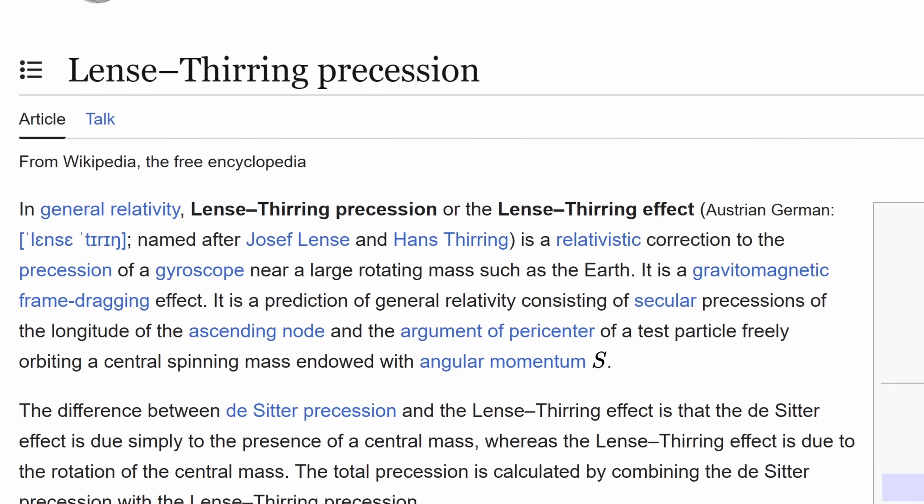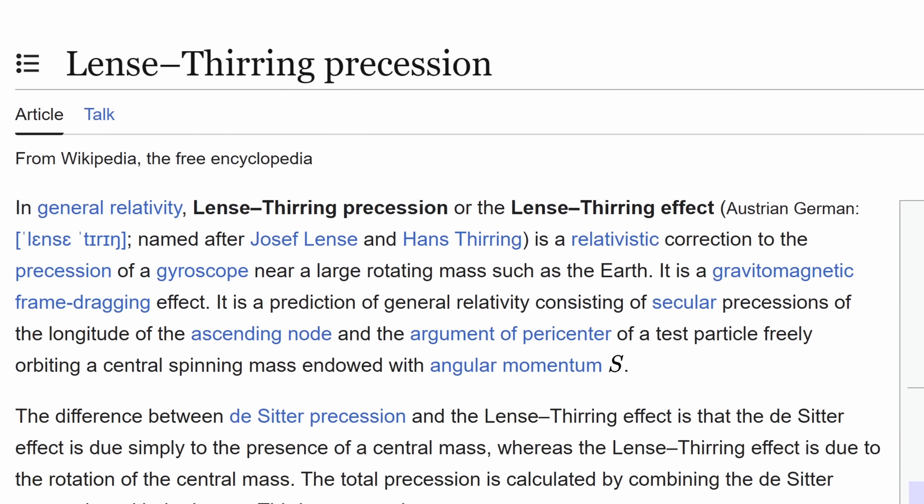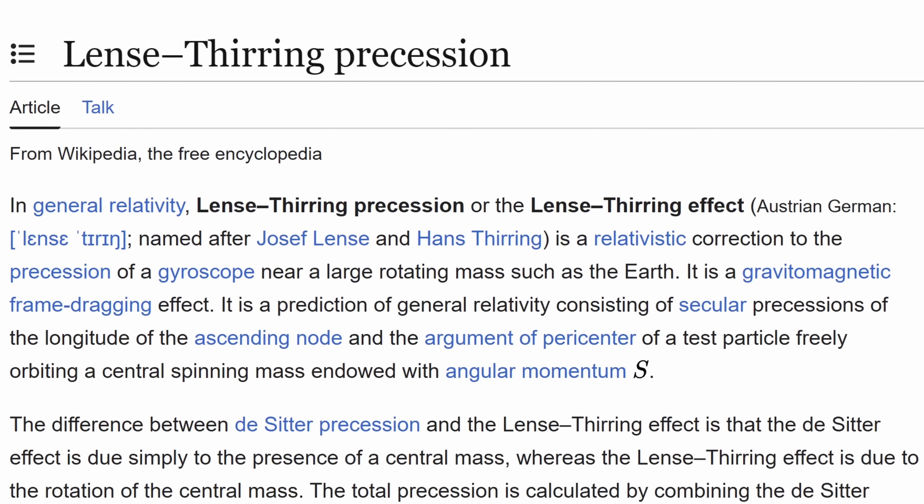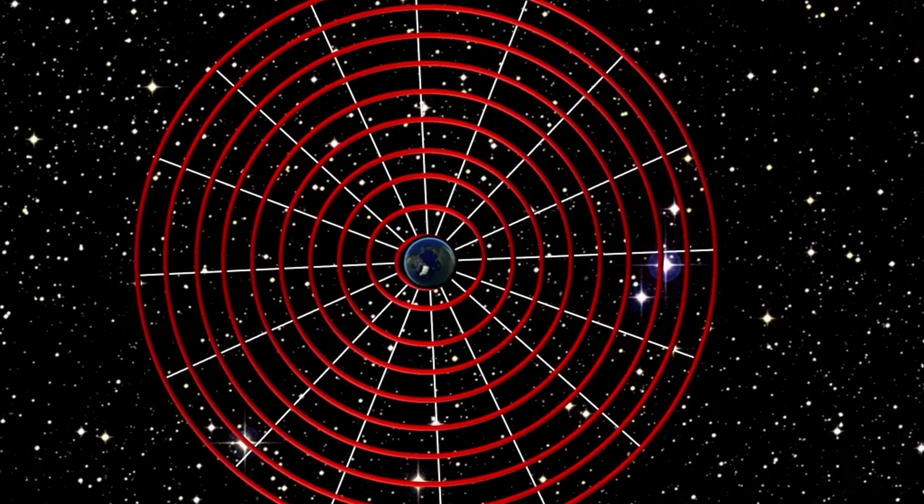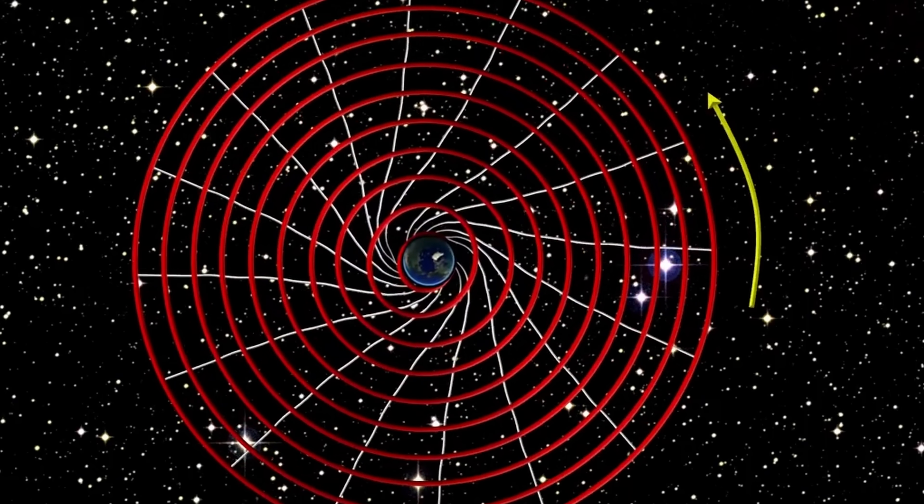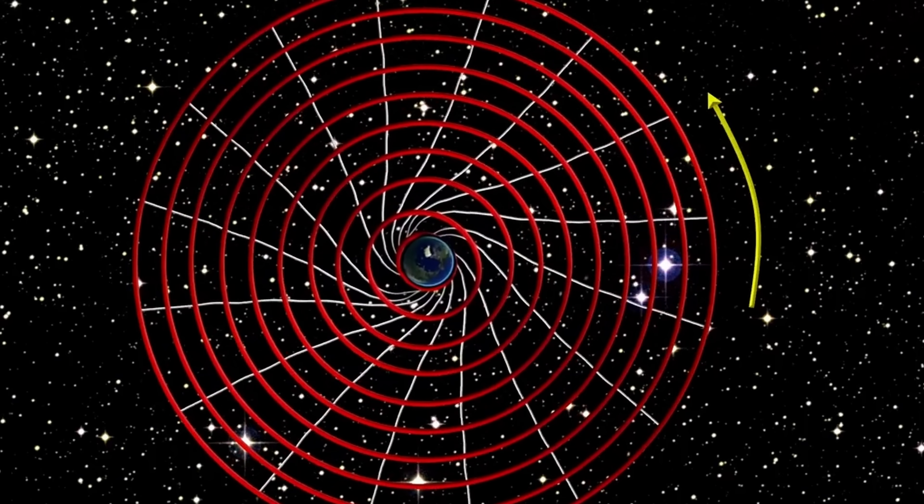But I guess let's start with the theory. So what is frame dragging and how can you actually visualize it? And so here let's try to understand this concept that's technically known as Lense-Thirring precession. And you can see the visualization of this in one of the videos by David Butler on YouTube. But to put it simply, according to Einstein, gravity is not just a force, it's essentially a curvature of space-time.